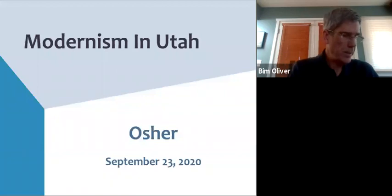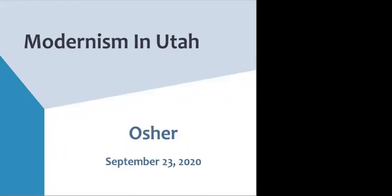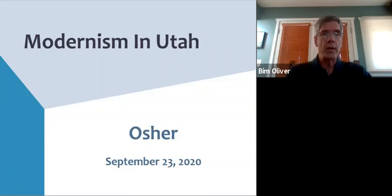Thanks, Sandy. And thanks everybody for joining us today. We're going to talk about modernist architecture in Utah. We're going to take a little tour of modernist architecture. We're going to start with the origins of modernism in Europe, and then we're going to look at how modernism migrated to the United States and was adapted here in America. And then we'll land in Utah and talk about how modernism evolved in Utah and finish with kind of a retrospective on its significance for the Utah architectural landscape.